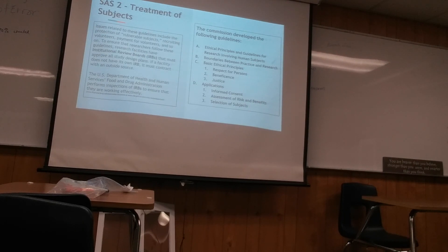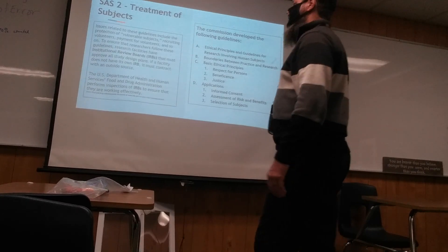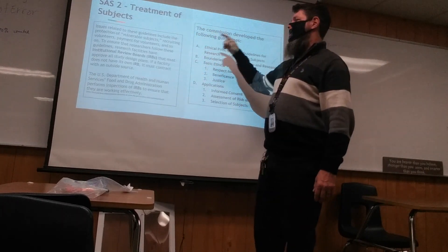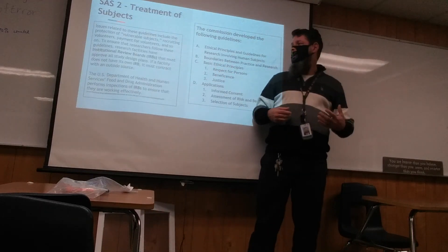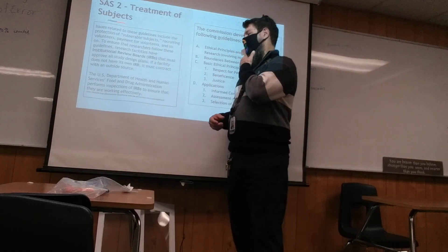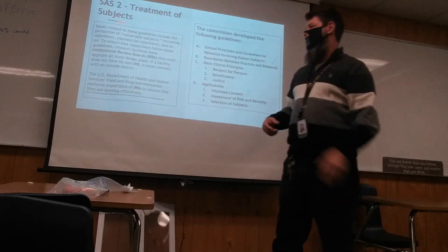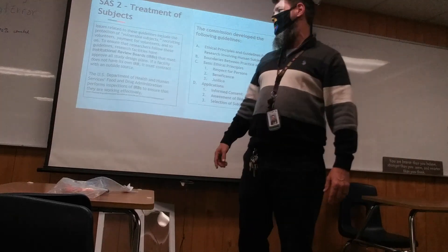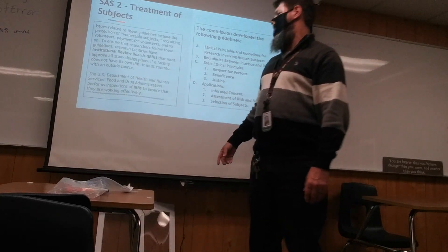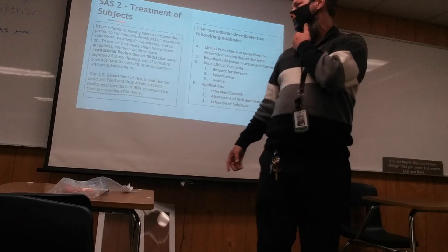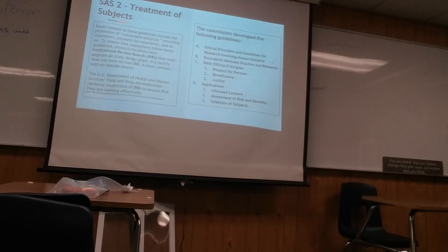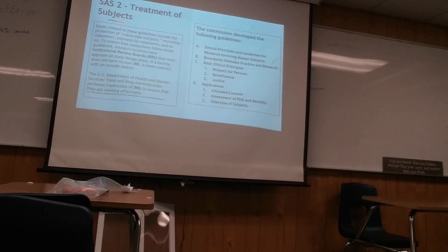Issues related to these guidelines include protection of vulnerable subjects, recruiting volunteers, and payment for volunteers. To ensure researchers follow the guidelines, research facilities have Institutional Review Boards, or IRBs, that must approve all study designs. If a facility does not have its own, it must contract with an outside source. The Department of Health and Human Services and the Food and Drug Administration inspect IRBs to ensure they are working effectively.